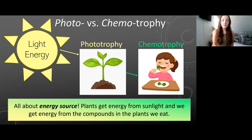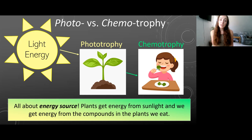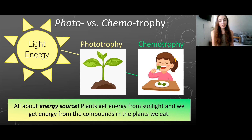For example, you can see plants getting energy from sunlight, and we humans as chemotrophs get our energy from the organic compounds within the plants that we eat, or within the animals that we eat that are eating the plants. This depiction, although helpful, does not mean that phototrophy necessarily evolved before chemotrophy — but we won't get into that until later videos.